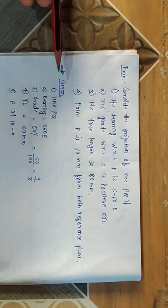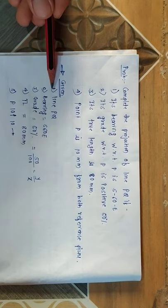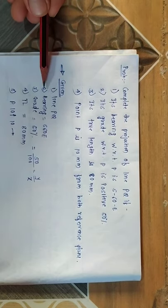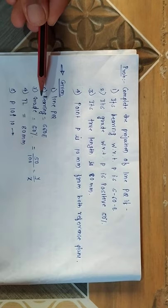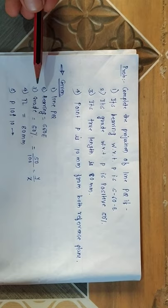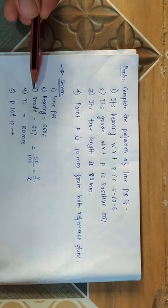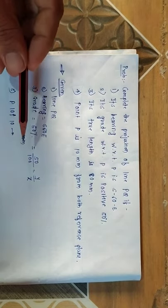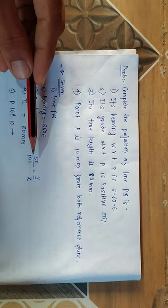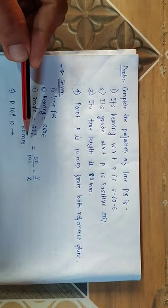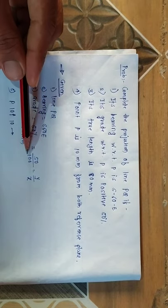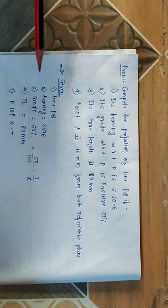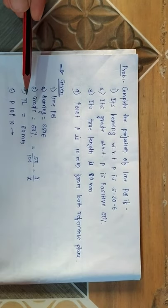From the problem we will write the given data. The given line is line PQ, bearing equals south 60 east, then grade 50 percent, which I've written as 50 divided by 100. That means 50 in the Y direction and 100 in the X direction. True length equals 80 millimeter.